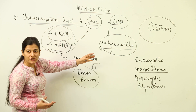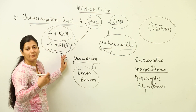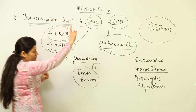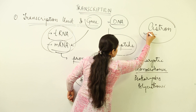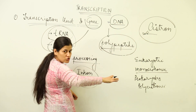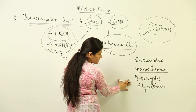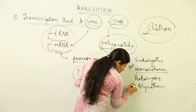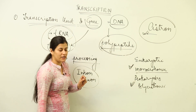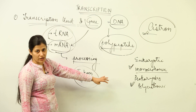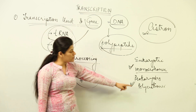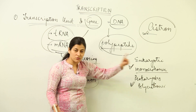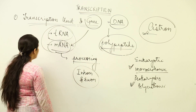Instead of calling it a gene — which was giving rise to both tRNA and mRNA, and also expression — that vague term has been replaced by the more specific term cistron. When studied in prokaryotic and eukaryotic cells, we see two conditions: one shows monocistronic arrangement, the other polycistronic, meaning the transcription unit gave rise to more than one polypeptide, while in the other only one polypeptide was formed.